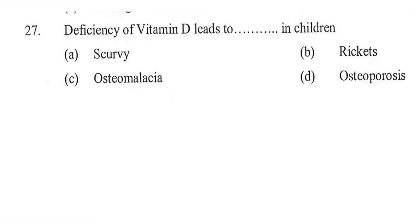Question twenty-seven: Deficiency of Vitamin D leads to which condition in children — option A scurvy, option B rickets, option C osteomalacia, or option D osteoporosis. The right answer is B, rickets.